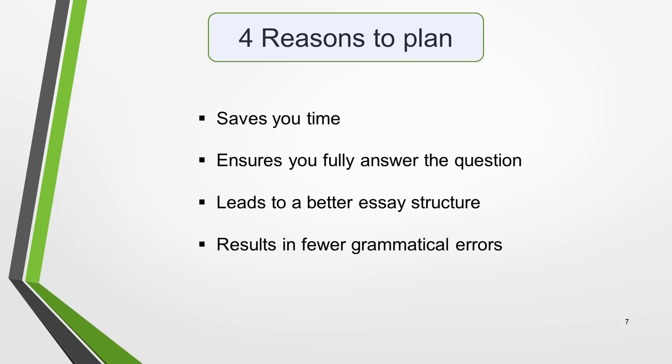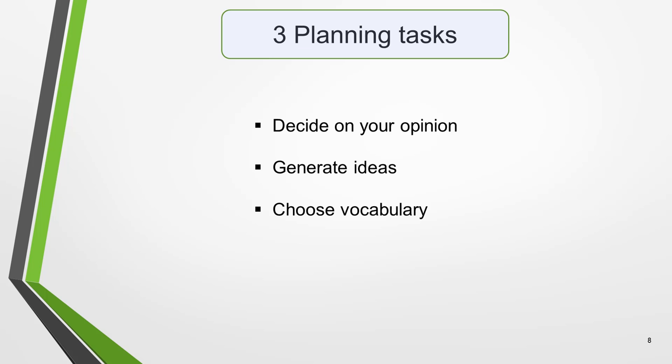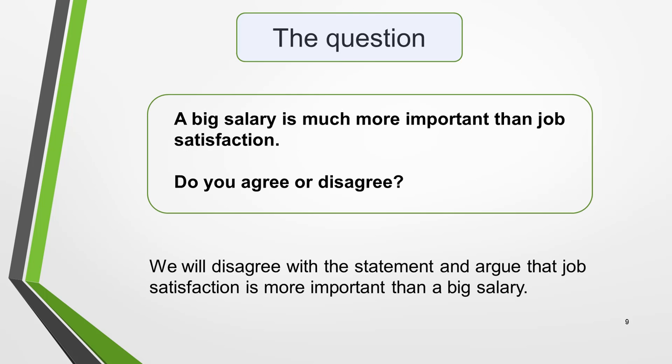So now that you understand why you must plan your Task 2 essay, we're going to look at how to plan it. There are three important things to do in the planning stage: decide on your opinion, generate ideas, and choose some vocabulary to use. Normally you'd begin by analysing the question but the one we're going to use today is quite straightforward and easy to understand, so we don't need to spend time analysing it. The first task is to decide on your opinion. Here's the question again: 'A big salary is much more important than job satisfaction. Do you agree or disagree?' For this essay I'm going to agree with the statement and argue that job satisfaction is more important than a big salary.